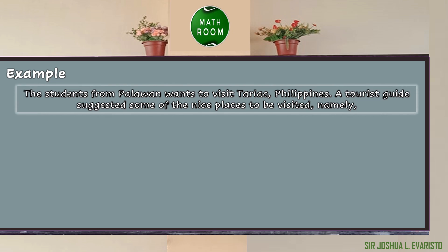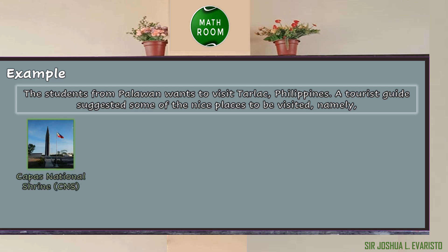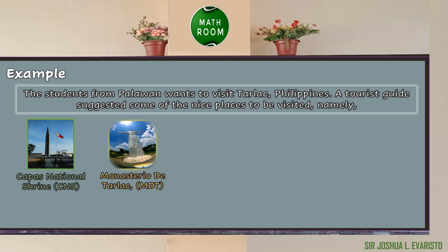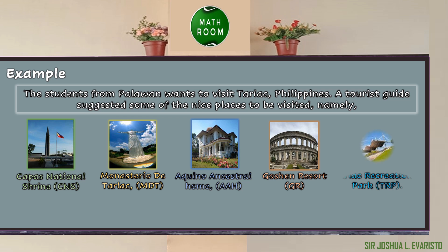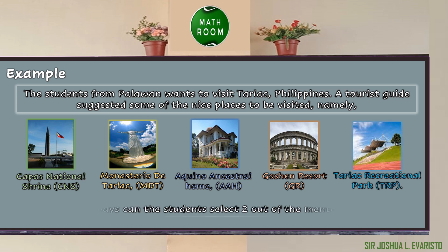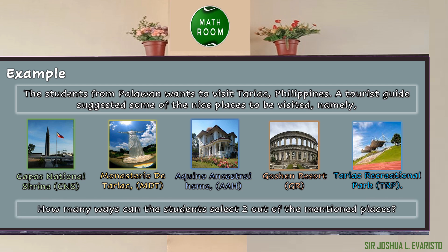For you to understand combination, let's have an example. The students from Palawan want to visit Tarlac, Philippines. A tourist guide suggested some nice places to visit, namely: Capas National Shrine, Monasterio de Tarlac, Aquino Ancestral Home, Goshen Resort, and Tarlac Recreational Park. In how many ways can the students select two out of the mentioned places?